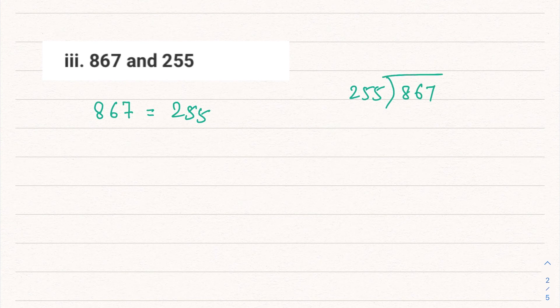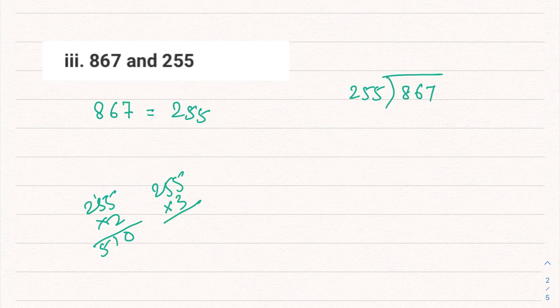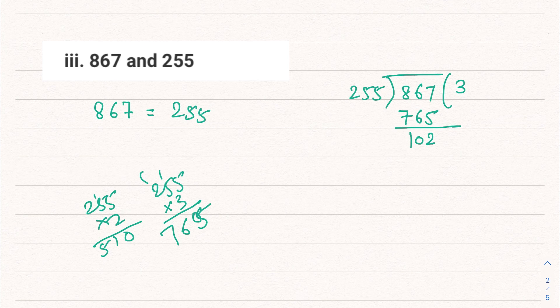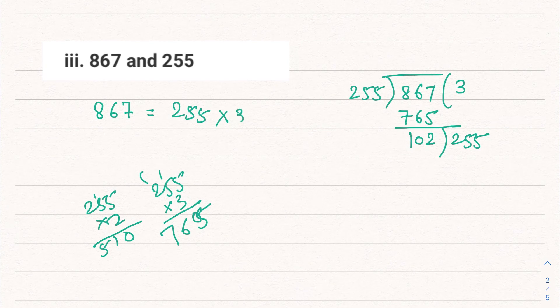Part 3: 867 and 255. Let's divide. The big number is 867, we have to divide this by 255. 255 into 2 is 510, into 3 is 765, 4 would be too much. So we'll multiply it with 3. 255 times 3 is 765, remainder is 102. So this can be written as 255 into 3 plus 102.